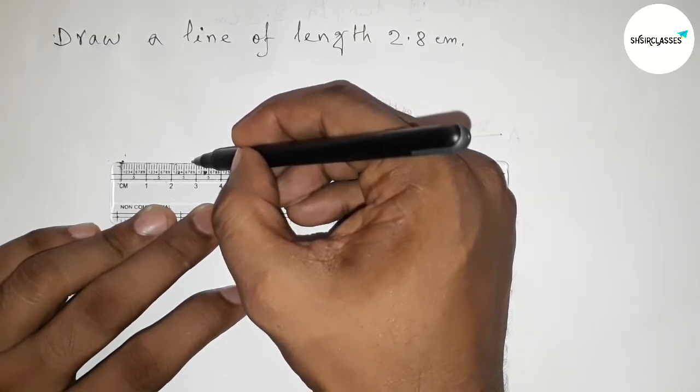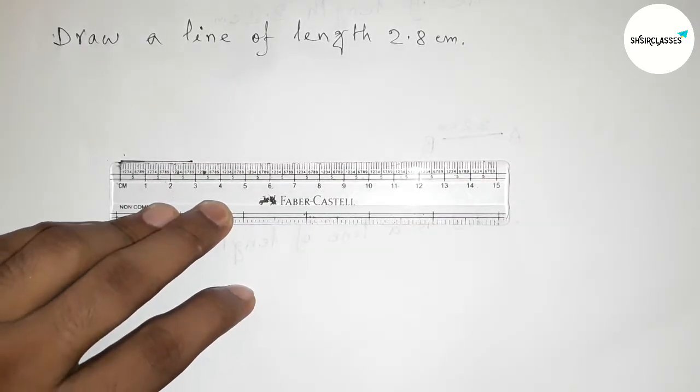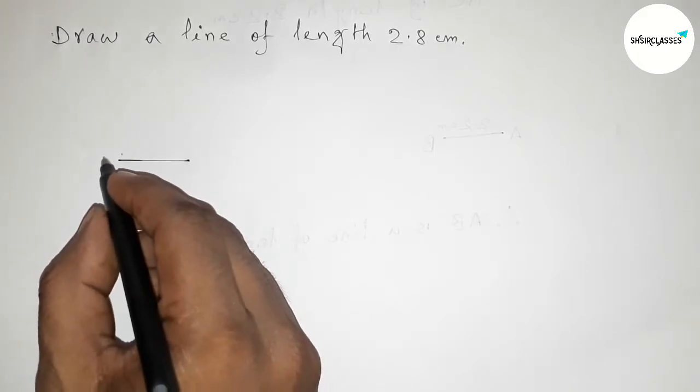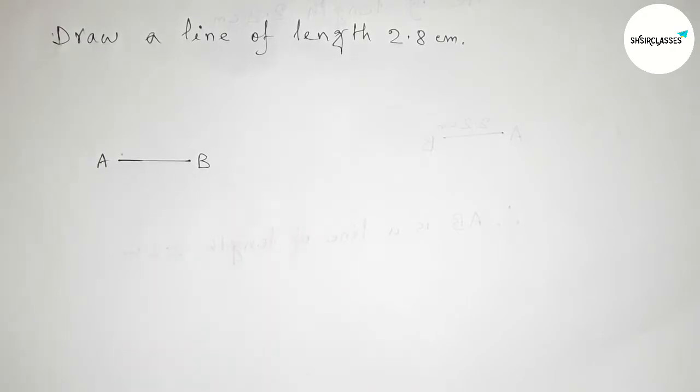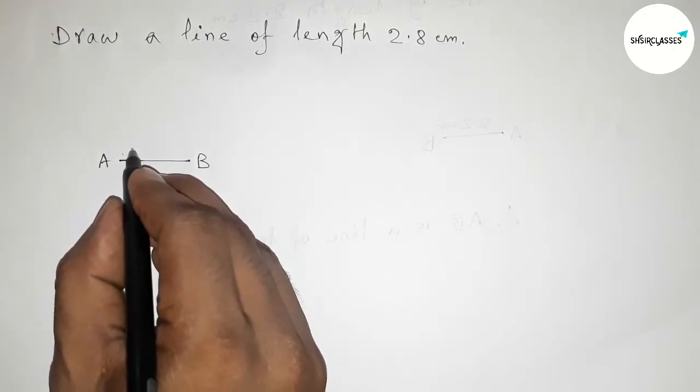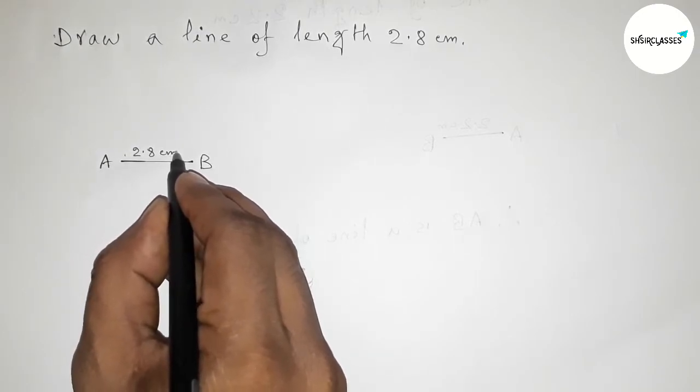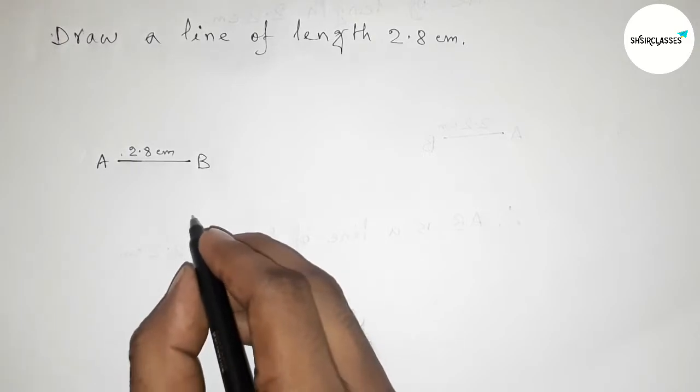So this is 2.8 centimeter length. Now first joining, okay, so taking point here A and here B, so AB equals to 2.8 centimeter line. So therefore here AB.